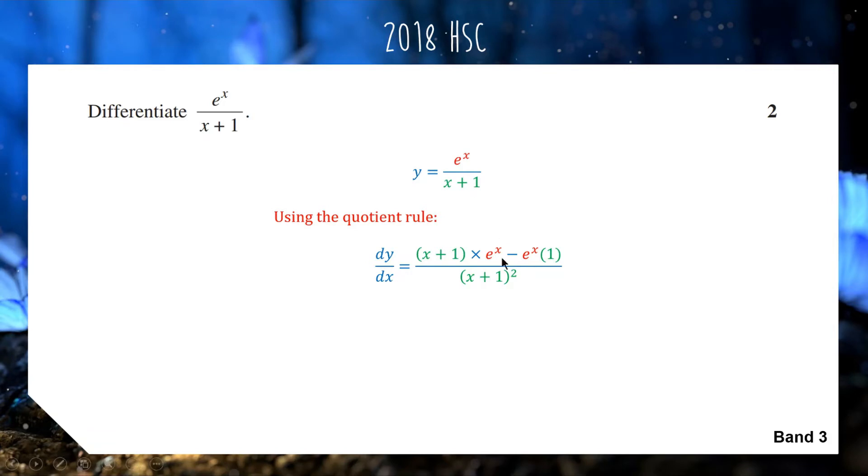Using our quotient rule, we're going to do the bottom of the fraction multiplied by the derivative of the top, and the derivative of e to the x is e to the x. Now we do minus and the top of the fraction multiplied by the derivative of the bottom. Derivative of x plus 1 is just 1. Then on the bottom, we do the bottom of the fraction squared.